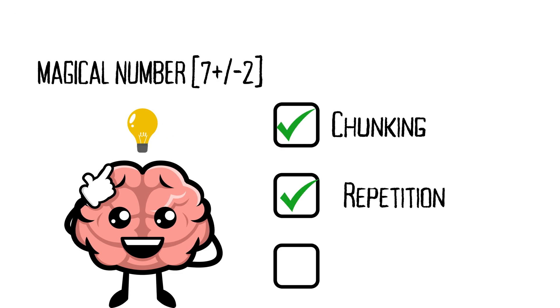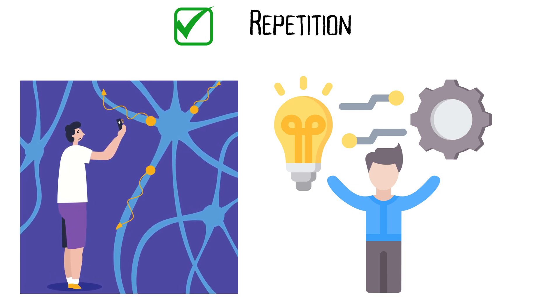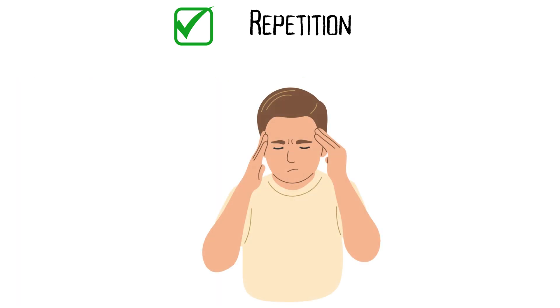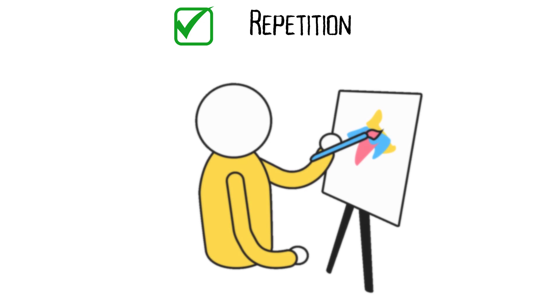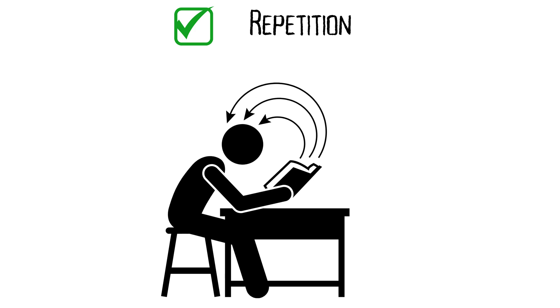Next, we have repetition. When you repeat information, you strengthen the neural connections associated with that memory, making it easier to retrieve in the future. This is why repetition is so effective for learning new skills or memorizing facts.